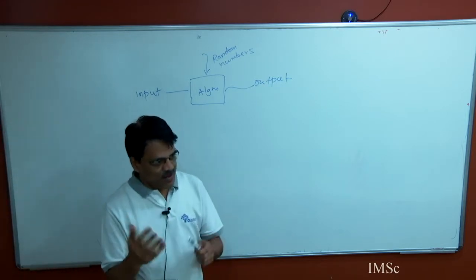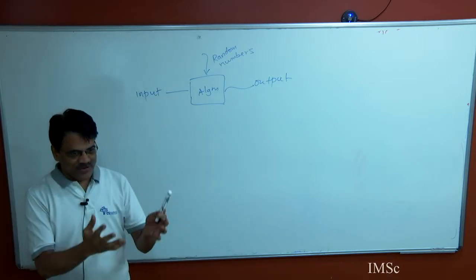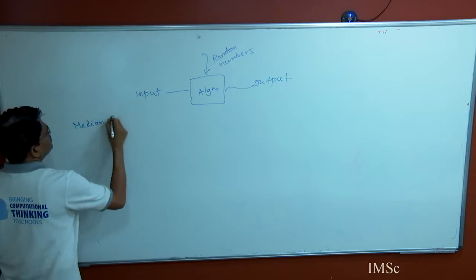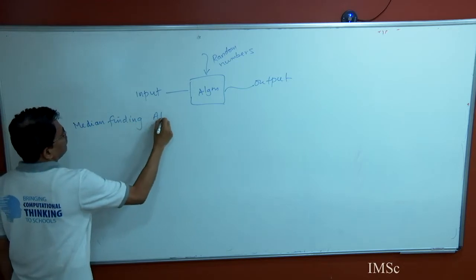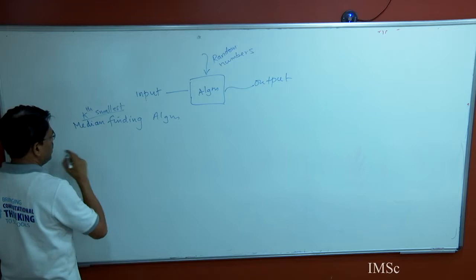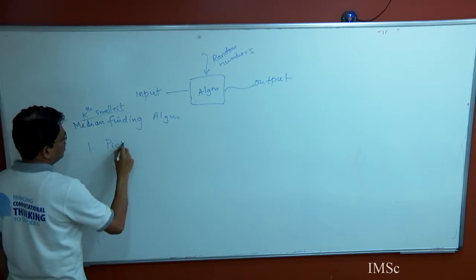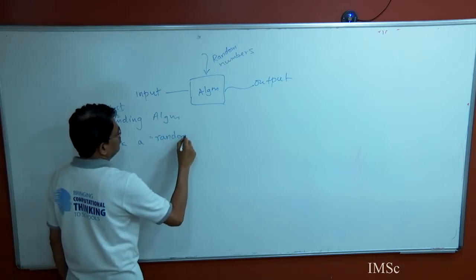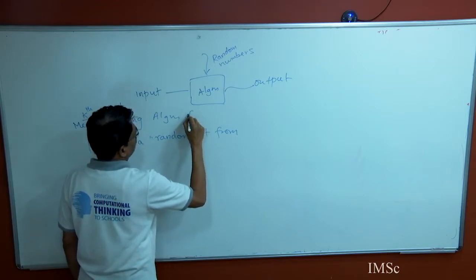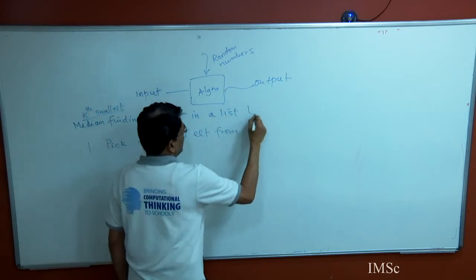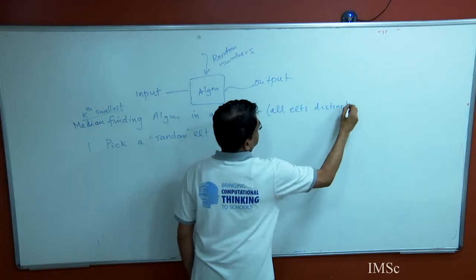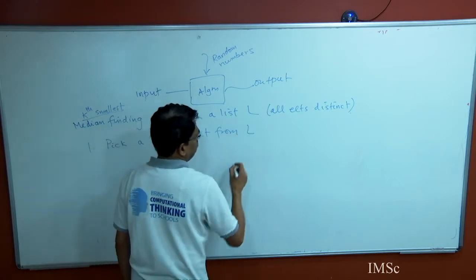Practitioners are happy because the algorithm is simple, theoreticians are happy too — so it is a win-win for everybody. Let us recall the median finding algorithm, or rather this algorithm to find the k-th smallest element. The first step is: pick a random element from the list. Say you want to find the median in a list L, and assume all elements are distinct — it just makes the analysis cleaner.